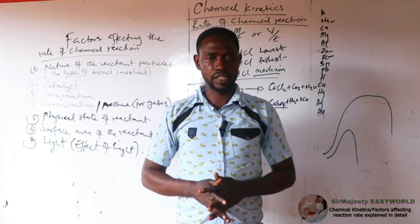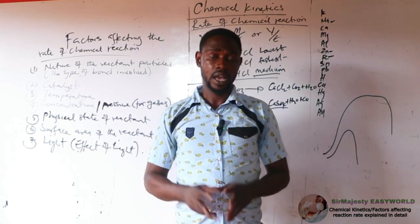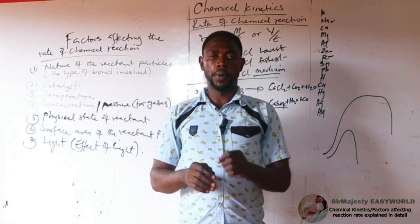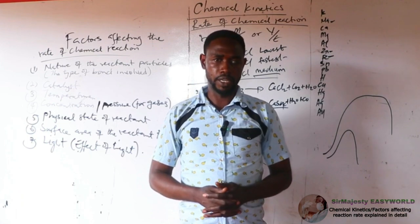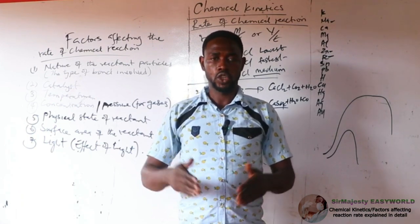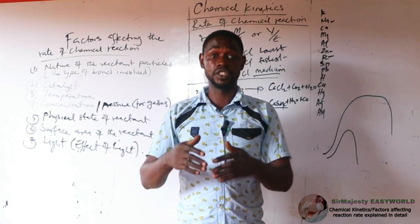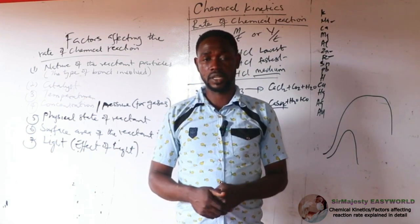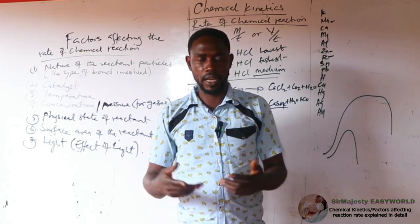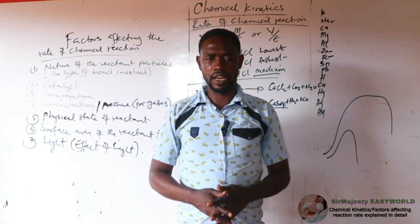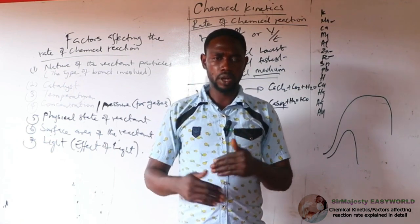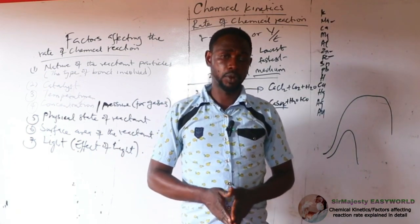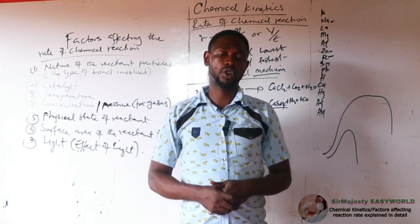Therefore, we correctly define catalysts as any substance that alters the rate of chemical reaction and remains qualitatively and quantitatively unchanged — meaning it will not affect the product. It cannot start a reaction; it can only affect the speed. This implies we have positive catalysts and negative catalysts. Most catalysts are found among the transition elements because they have variable oxidation states, and their compounds — such as manganese(IV) oxide, cobalt, nickel, platinum, and finely divided iron — are common catalysts.